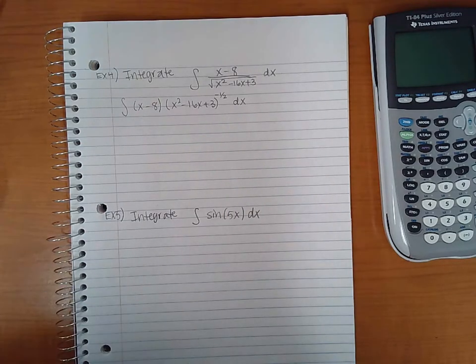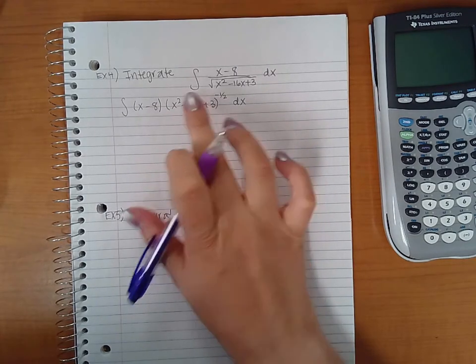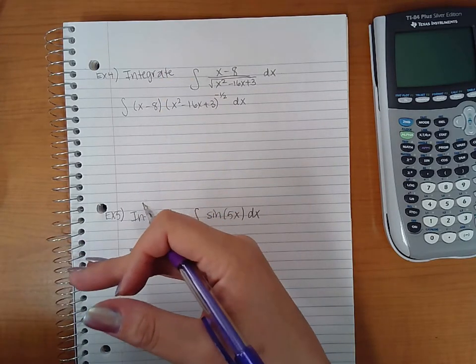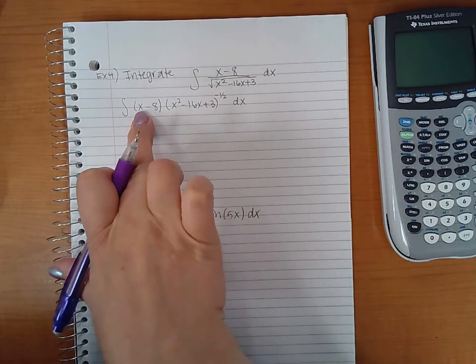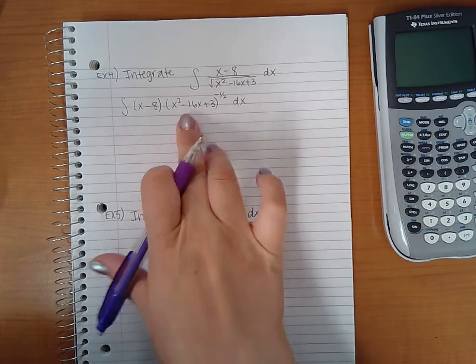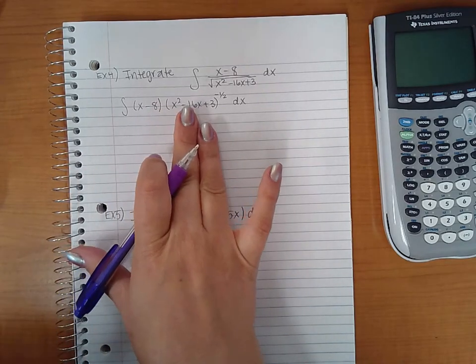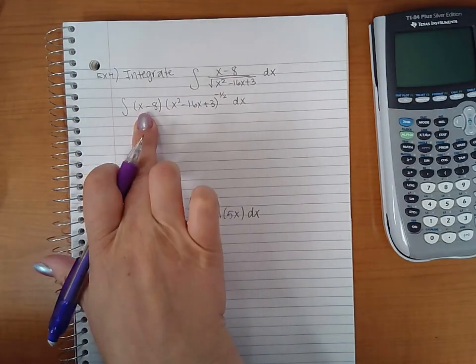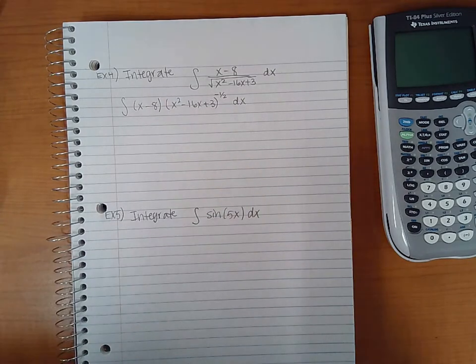You could try both and see which makes more sense, but typically the one with the higher exponent is going to be your u, because when you take the derivative you'll end up with one less power. Also, another indicator is which one is inside of another function.